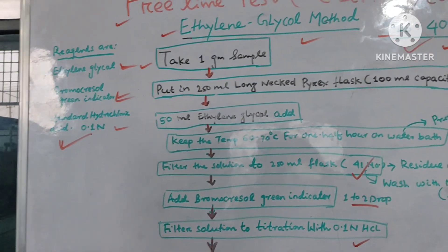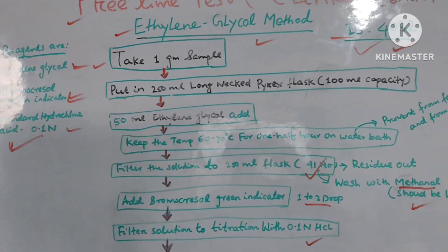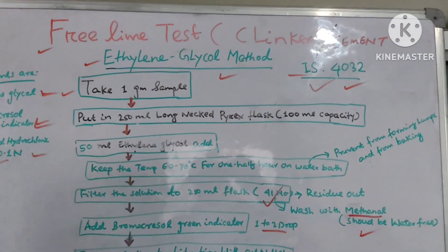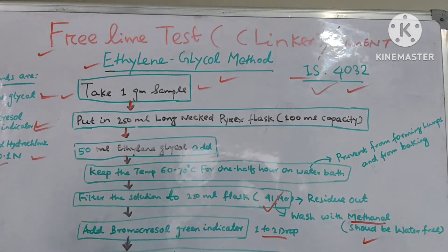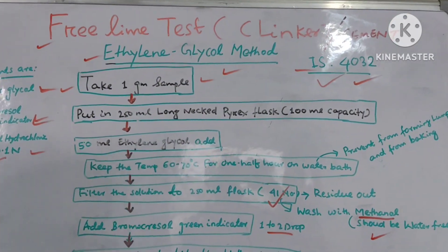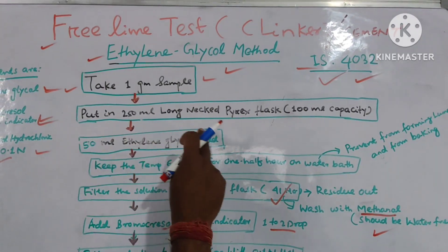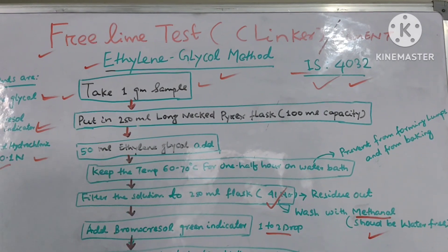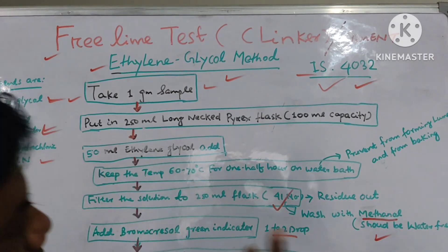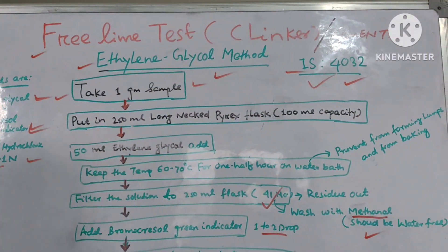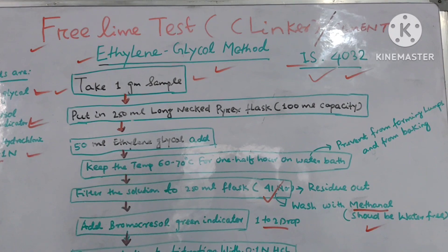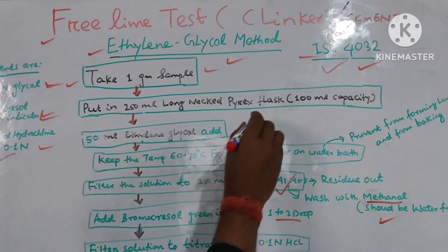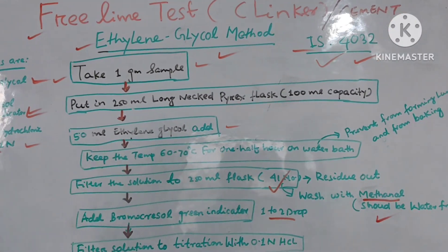First step: suppose we are going to test for clinker, so take one gram of that sample. Put it in a 250 ml long-neck Pyrex flask of 100 ml capacity. Then take 50 ml of ethylene glycol and add it to the flask.